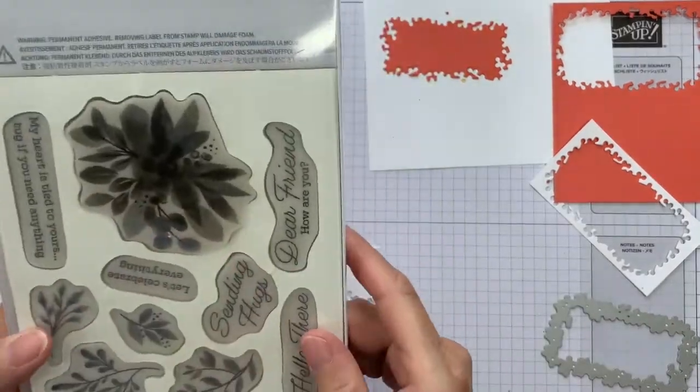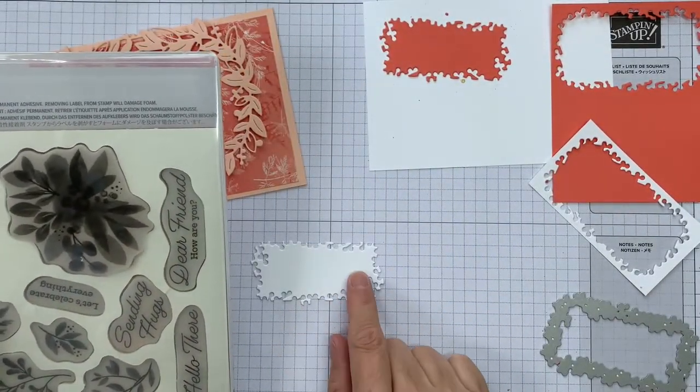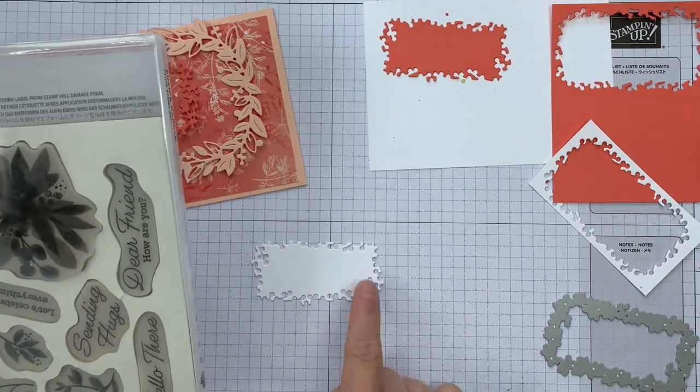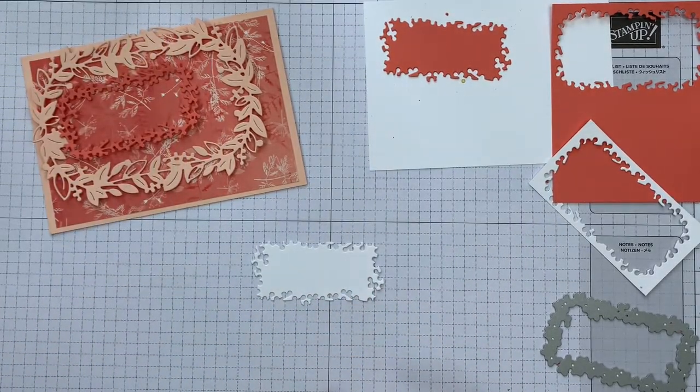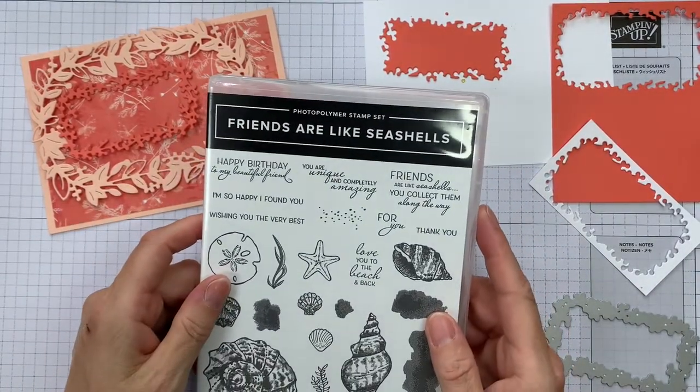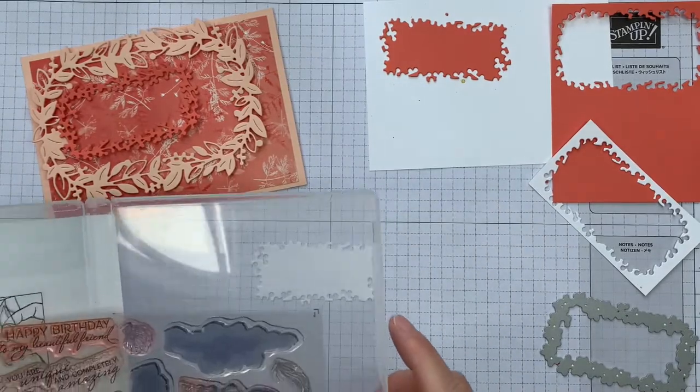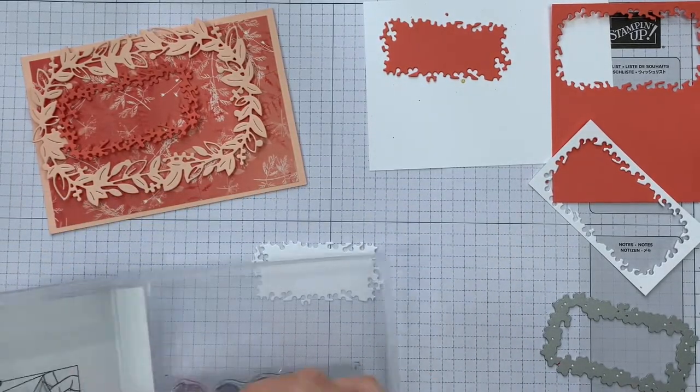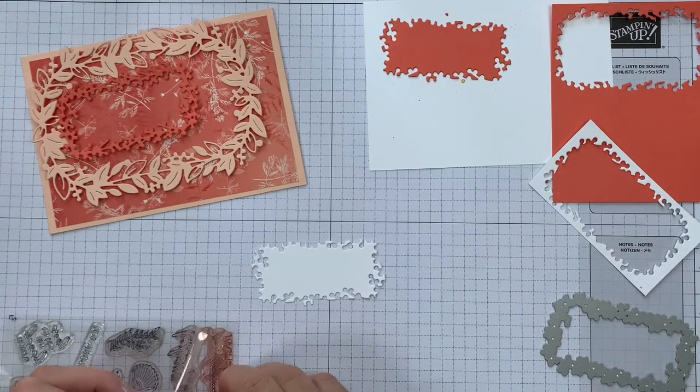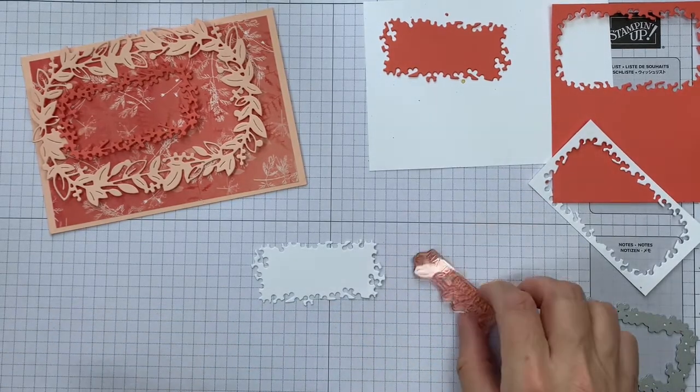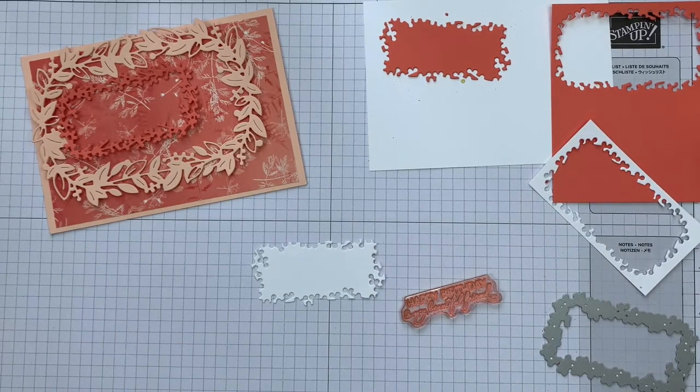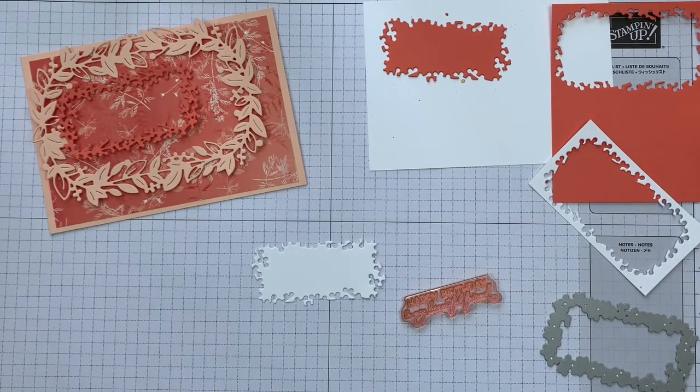So I've decided to bring in the Friends Are Like Seashells stamp set and use the Happy Birthday to My Beautiful Friend. Because this is photopolymer, I'm going to be able to see exactly where I'm stamping. So I'm just going to grab myself a block.